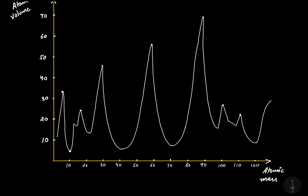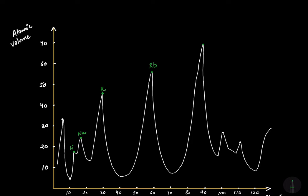I have marked the alkali metals in green. Lithium is here, sodium here, potassium here, rubidium here, and caesium at the last top sharp peak. So we have the positions of alkali metals on the peaks or sharp maxima of the curve.